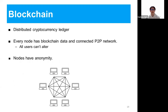I explain blockchain briefly. Blockchain is a distributed cryptocurrency ledger. Every user is treated as a node. Every node has blockchain data and is connected to a P2P network. Blockchain guarantees immutability. Since each node has transaction data, when a hacker tries to alter it, he has to attack all nodes, which is not feasible. Nodes also enable anonymity. We can't identify a user from their blockchain data.